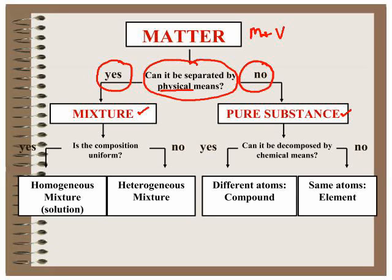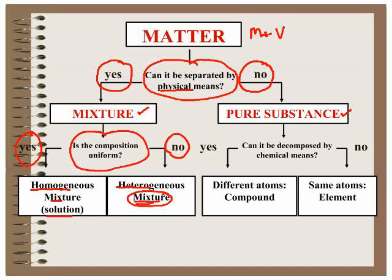So if you decide that it's a mixture, you can physically separate it. Then you look to see if the mixture is in uniform composition. If it is uniform in composition, then it's a homogeneous mixture, which we call a solution. If it is not uniform, then it's simply a heterogeneous mixture. We tend to just call those mixtures. So solution for homogeneous, mixture for heterogeneous.